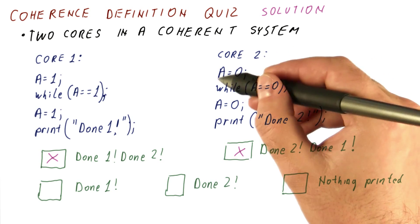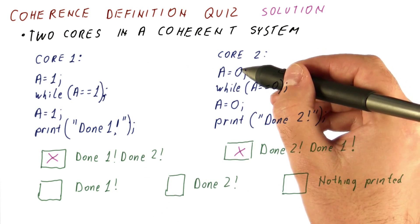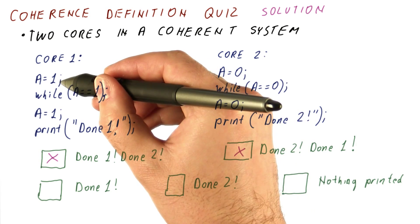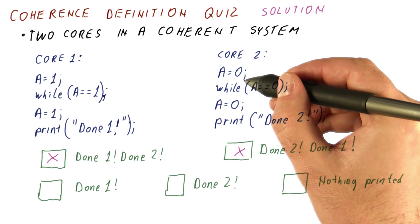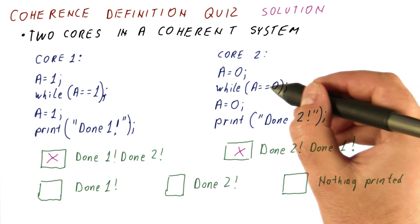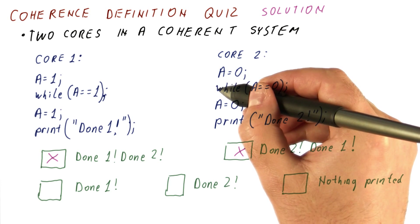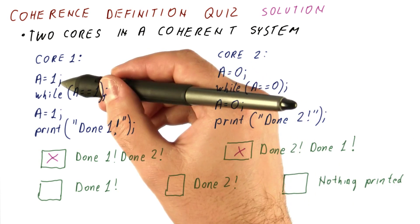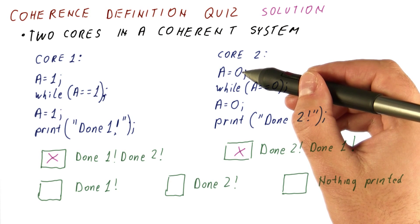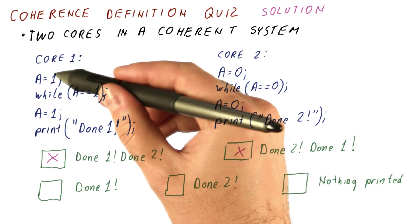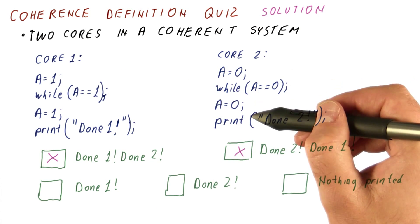If A equals zero happened before all of this, then what happens is A equals zero, A equals one. Now we're stuck waiting for one. But core two will continue, and it has to see the one, because this is a coherent system. Eventually, because A equals one happened after A equals zero, core two has to see the one and proceed.